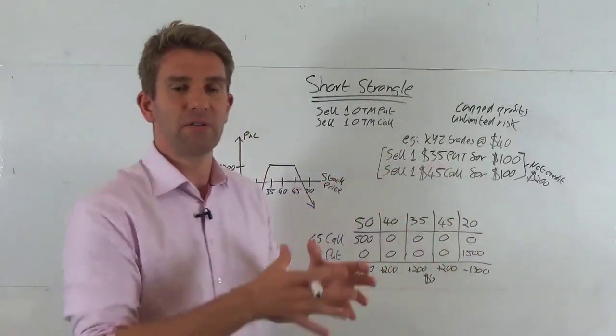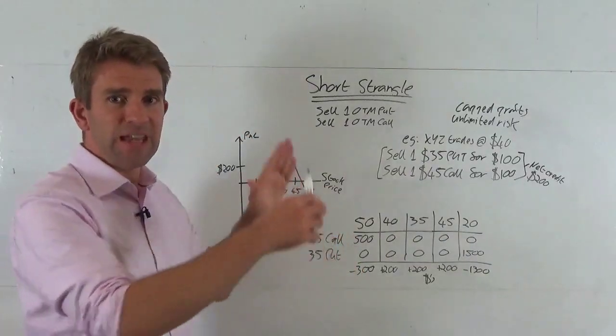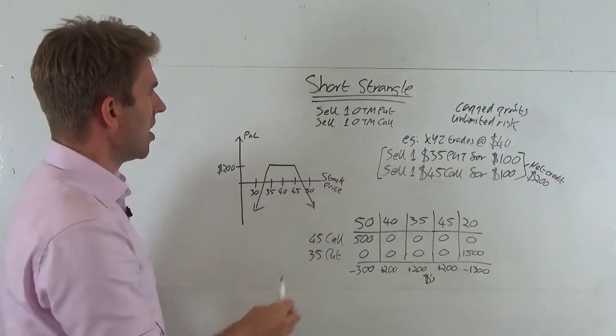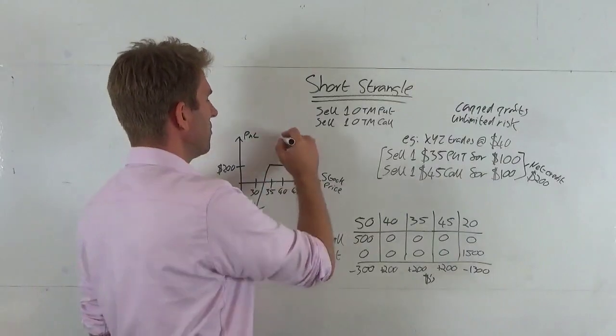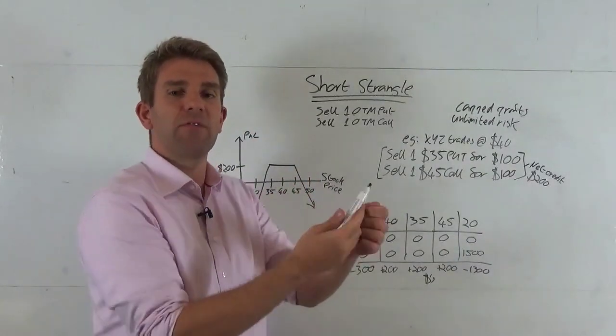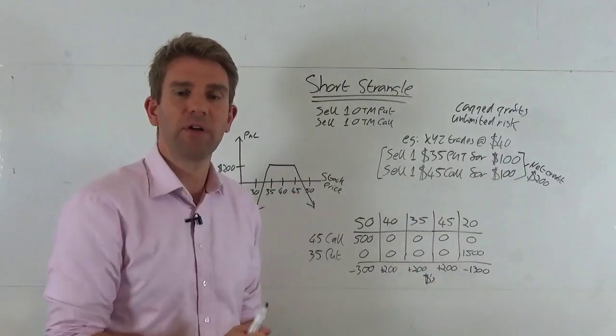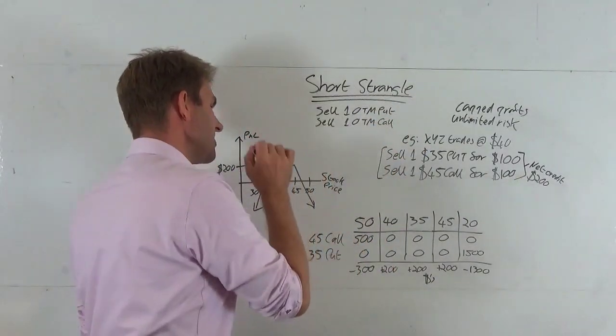It's slightly different from the straddle in that straddle has a point on this P&L outcome price chart, whereas the strangle gives you a bit more of a range. You don't have potential for as much profit, but you have more of a chance of profit because you've got this tabletop graph.